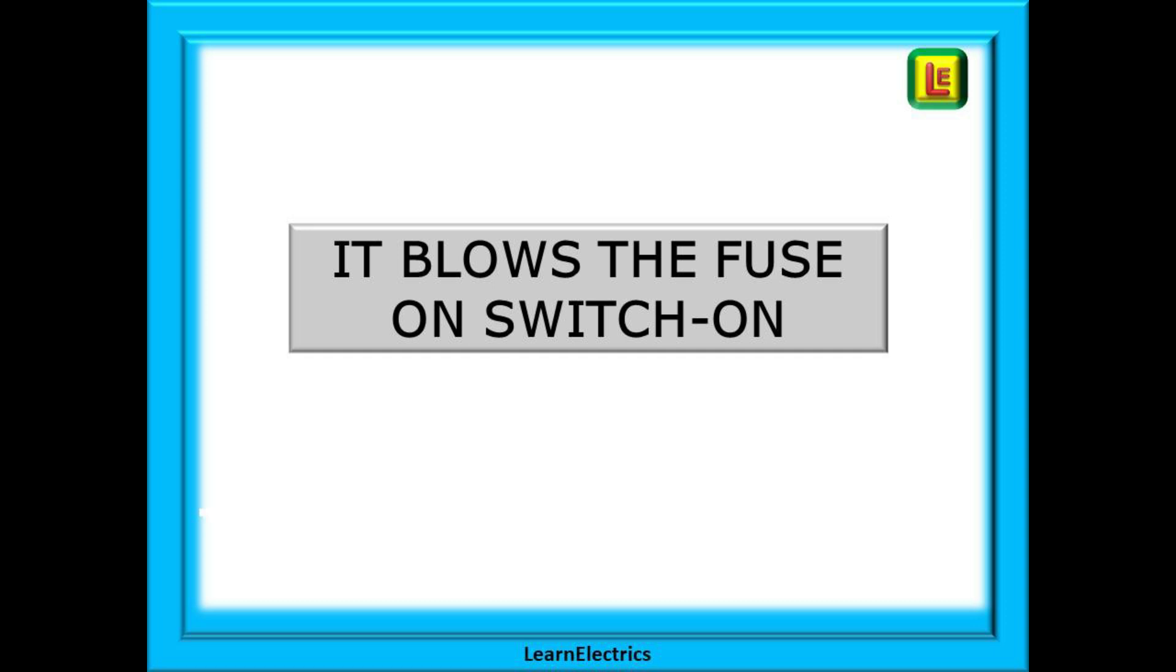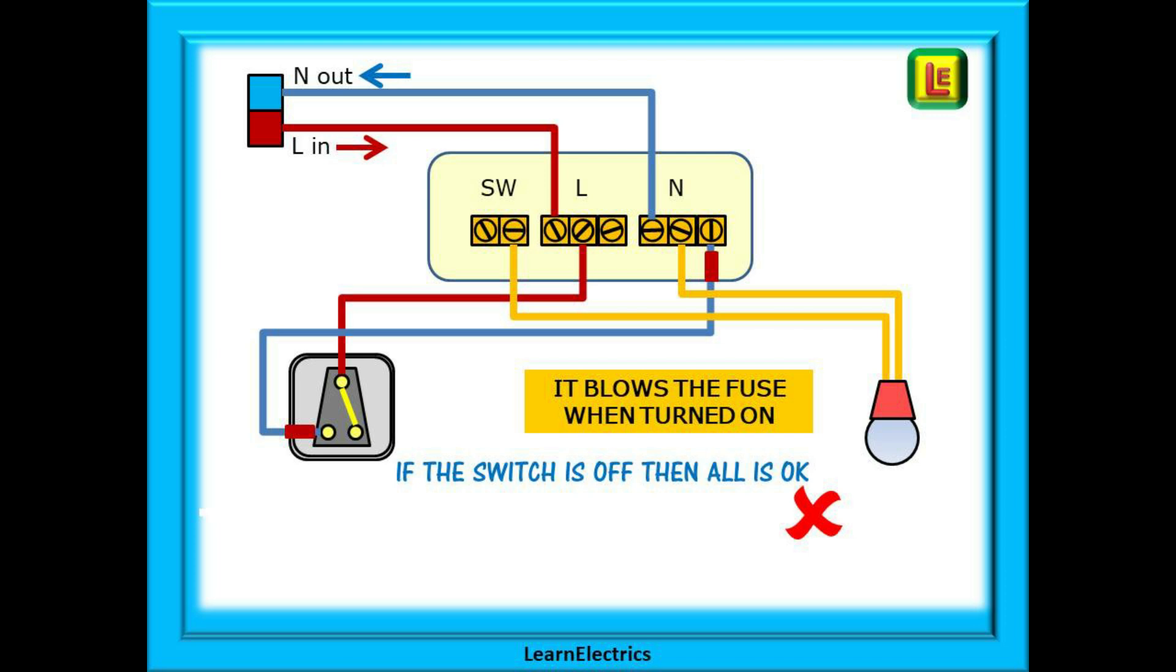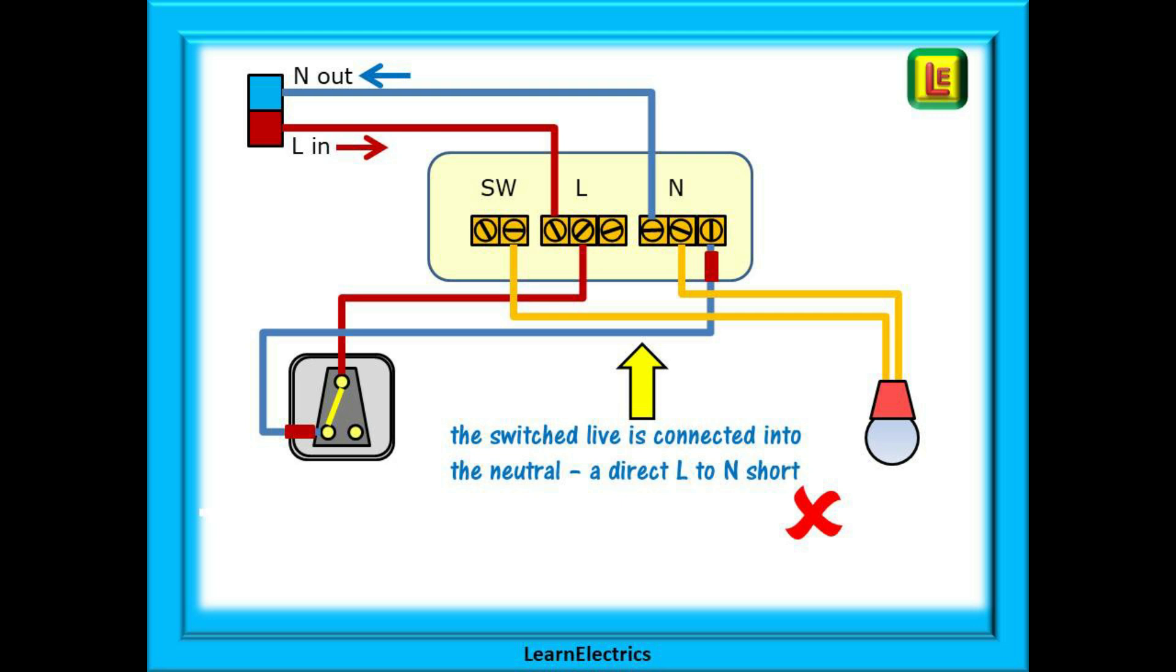Another common problem after decorating is this one. The customer tells you that every time they switch the light on, it blows the fuse. They are usually quite desperate at this stage as they now have no lights in the house. If the switch is off, the breaker is okay. But when they switch it on, bang! All the lights in that part of the house go out. So what has happened and how do we fix it? The customer will tell you that they've been decorating and they've put the wires back themselves. To the customer, all blue wires are neutral and should all go together in the neutral block. But we know different, or should do.